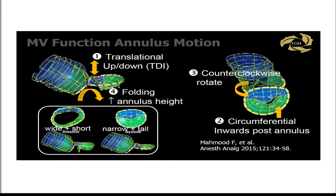Breaking down the models reveals four motions of the mitral annulus not visible in 2D or en-face 3D. There is an up-and-down motion, a circumferential motion — moving inward and counterclockwise as the ventricle does — and a concept called folding, which reduces both annular and leaflet stress. All of this becomes apparent when you start looking at models.